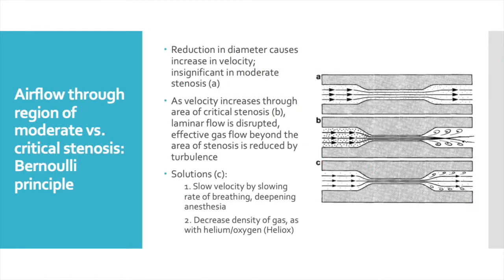Remember that airflow speed increases as it passes through an area of stenosis. That doesn't matter if the stenosis is only moderate, but if the stenosis is critically narrow, then beyond that point effective gas movement will be reduced by turbulence. The way to solve this is to slow the patient's rate of breathing by deepening anesthesia, or by using a lower-density gas such as heliox — a mixture of helium and oxygen.